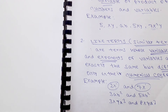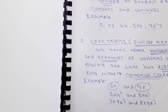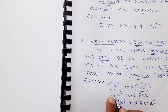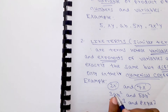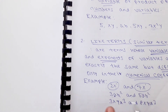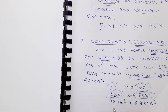Another example: consider a·b squared and another term a·b squared — these are like terms. The variables are a and b, each with matching exponents, so they are like terms. Similarly, see x·y·a cubed and x·y·a cubed — those are like terms.